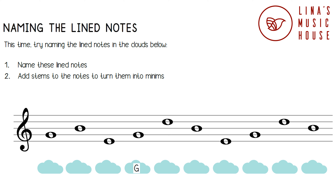The next note is on the fourth line. The fourth word in Every Good Boy Deserves Fruit is Deserves, so this note is a D note. The next note is on the third line — the third word is Boy — so this is a B note. The next note is on the first line. The first word is Every, so this is an E note.